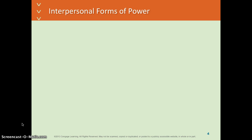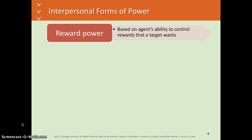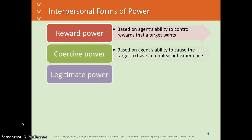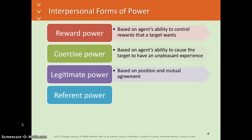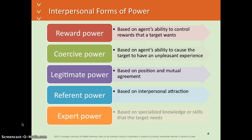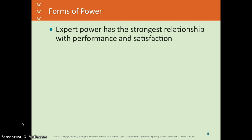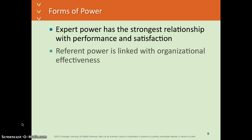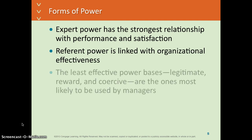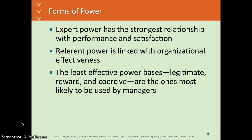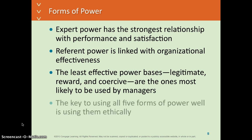Interpersonal forms of power: French and Raven were the researchers that developed this. There's reward power, coercive power, legitimate power, reverent power, and expert power. Reward, coercive, and legitimate are called position power; reverent and expert are called personal power. Expert power tends to have the strongest relationship between performance and satisfaction, and reverent power is effective when you revere someone. What's least effective is position power — being the boss, rewarding or punishing people — yet that is what most managers use. The best approach is to use portions of those powers ethically.